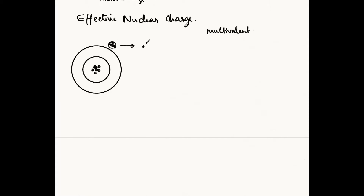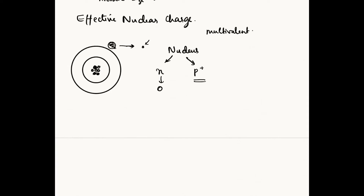This nucleus has six protons — I'm not drawing the neutrons right now, which we're not really concerned about. The nucleus has neutrons and protons, and the protons are the ones which provide the charge to the nucleus because the neutrons are zero charge. As I keep on adding more and more protons, the nuclear charge will keep on increasing, and I'm also adding more and more electrons.